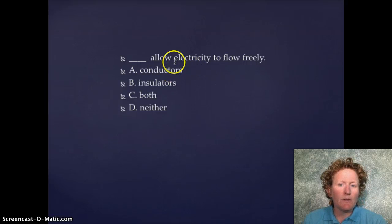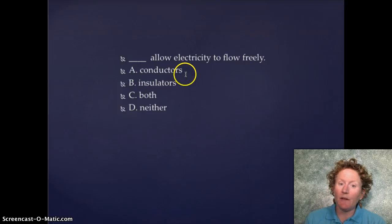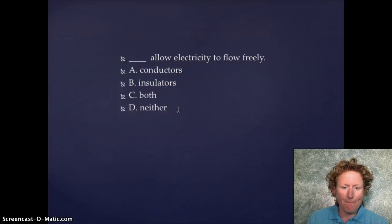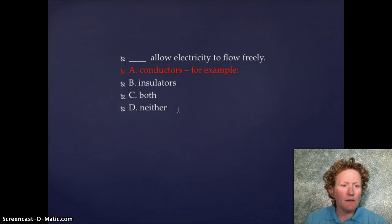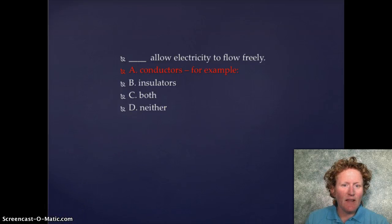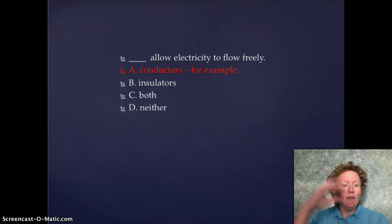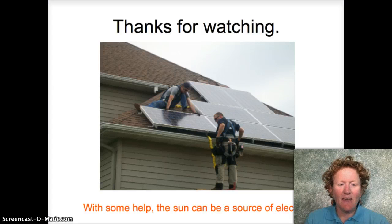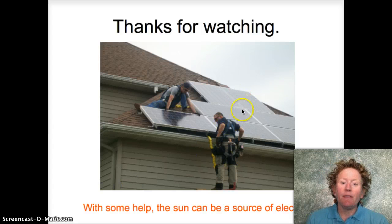What will allow electricity to flow freely? Conductors, insulators, both, or neither? If you guessed conductors, you're exactly correct. Conductors don't hold on to their electrons tightly, so electrons can flow easily. Thanks for watching. Remember that the sun can also be a source of electricity.